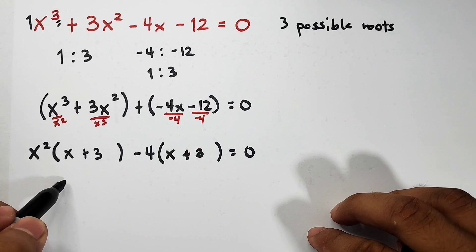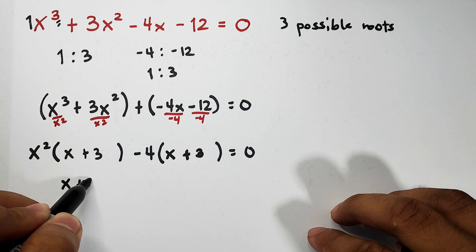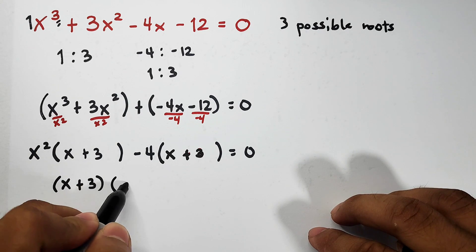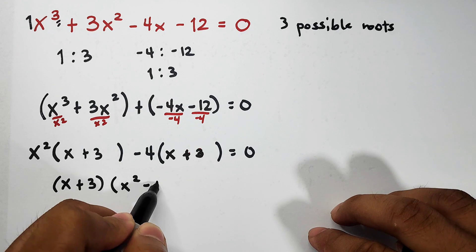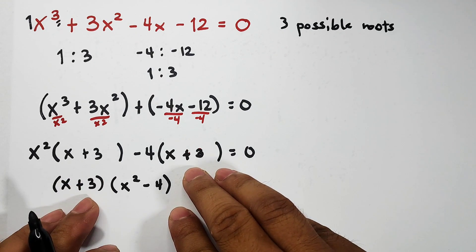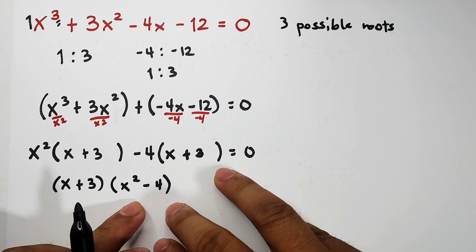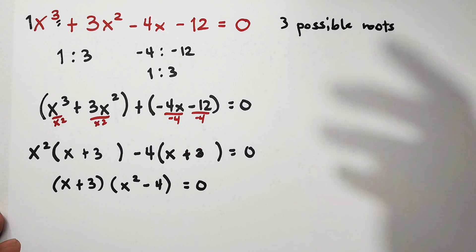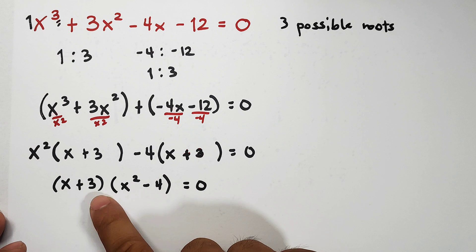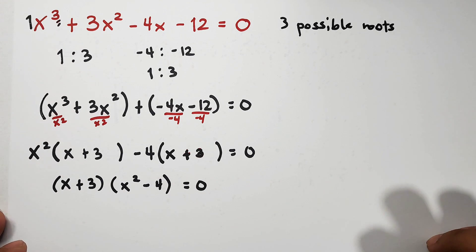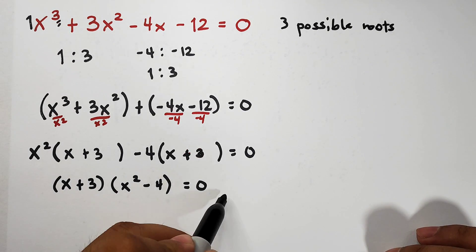As you can see, there's now a common factor. Factor out the x plus 3. That is x plus 3 times what remains: x squared minus 4. So I took out the common factor which is x plus 3, then what remains is x squared minus 4, and then equal to 0. But guys, we're not yet done.